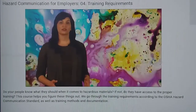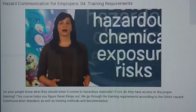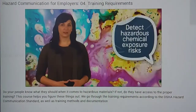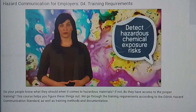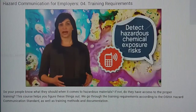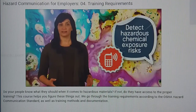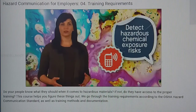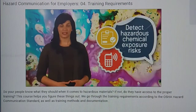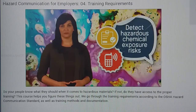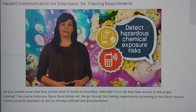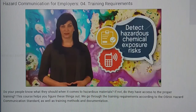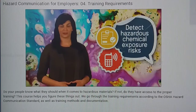Second, training should teach employees how to detect hazardous chemical exposure risks. For example, this could include how to read a device that monitors airborne chemical levels, or where they can access the documented levels. Or it might be as simple as knowing what a hazardous chemical looks or smells like when released.